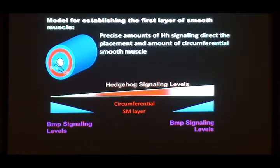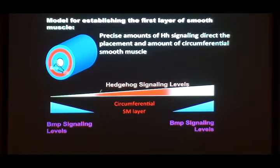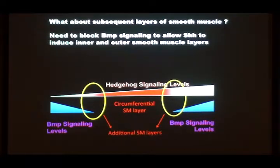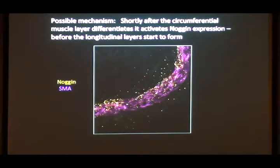That's fine for the first layer, but I told you that other layers form sequentially — you have to get the next layer to form. How do you then get second layers to form after the first layer has already differentiated? One way would be if you could somehow dampen the BMP gradients at both edges, pushing them back to make room for muscle differentiation in new positions. It turns out that as smooth muscle differentiates, it expresses a potent inhibitor of BMP signaling called Noggin.